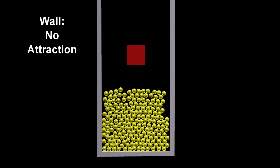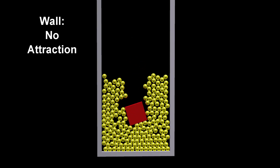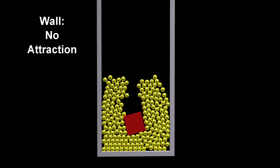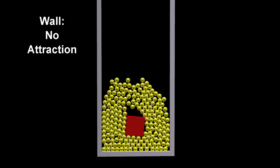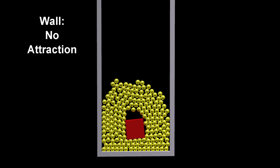When the red box falls on the yellow balls, which exert a moderate attractive force on each other, this is the result.